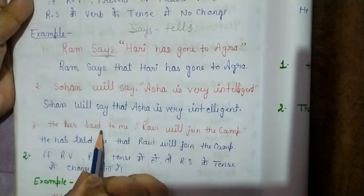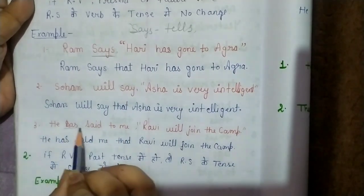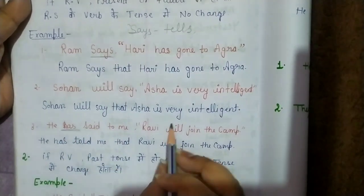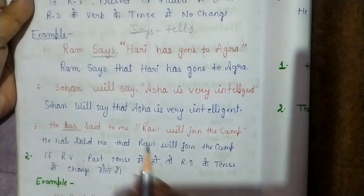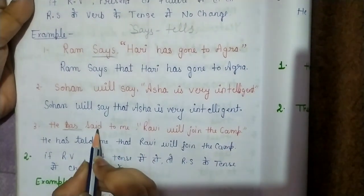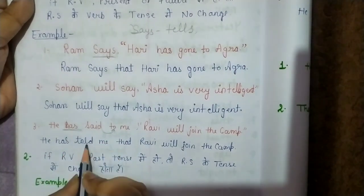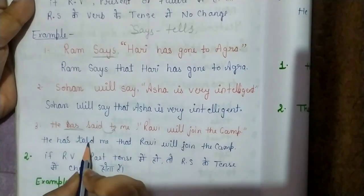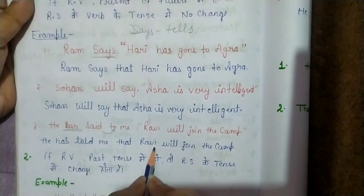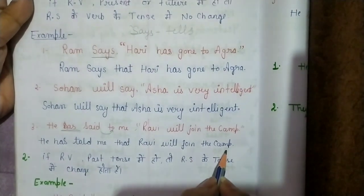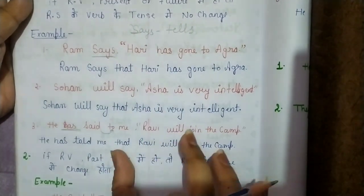He has said to me — Ravi will join the camp. So 'said' has an object here — 'to me'. Since object is given, 'said to me' becomes 'told me'. The answer is: He told me that Ravi will join the camp. I hope you understand this rule.